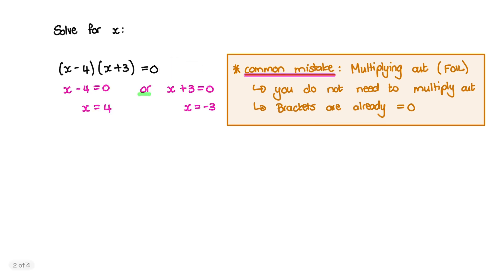That means when we solve for x, we can take the first bracket, x - 4, and set that equal to 0, then solve for x. Therefore, x = 4.